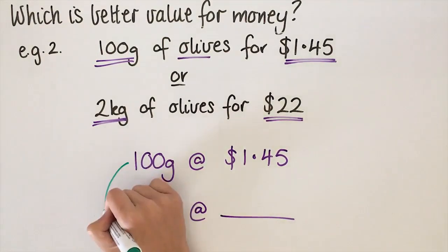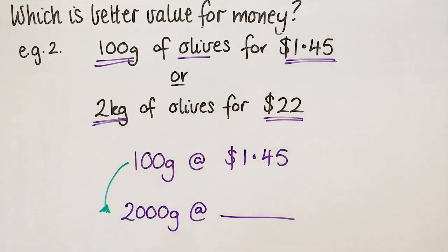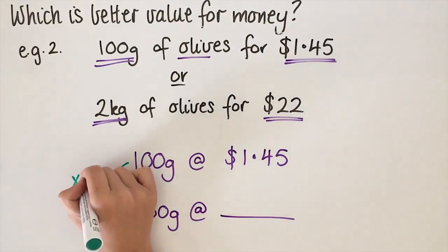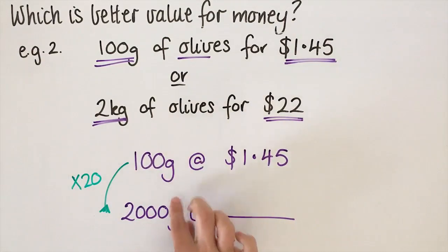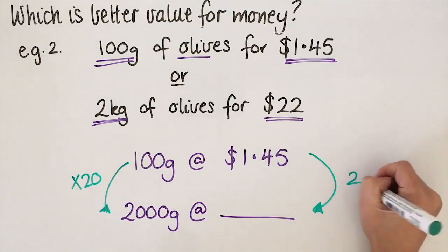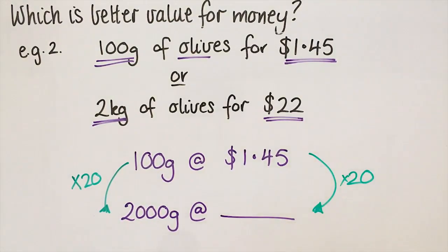To get from 100 grams to 2000 grams, I actually have to times by 20. This goes into this 20 times. So that means I have to do the same for this side. I have to times $1.45 by 20.